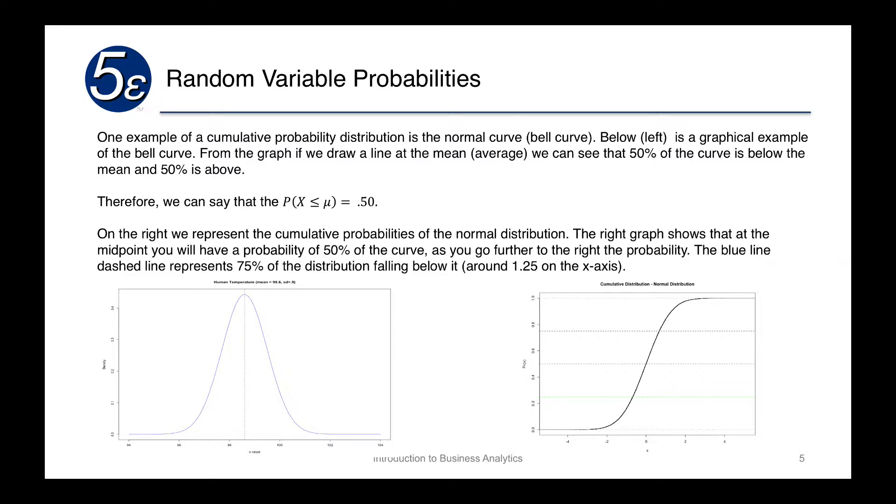One example of the cumulative probability distribution is the normal bell curve. On the left, we have a graphical example of our bell curve. From the graph, if we draw a line at the mean, we can see that 50% of the curve is below the mean and 50% is above. So we can say that the probability of x less than mu, which is our population mean, is equal to 0.5, 50% below.